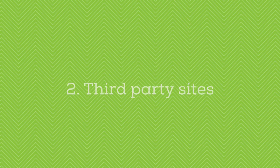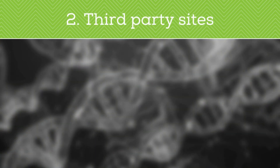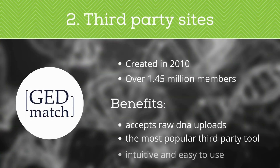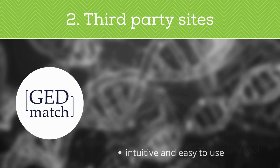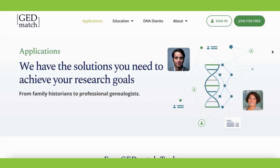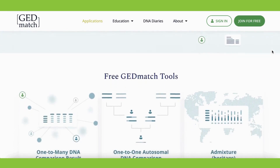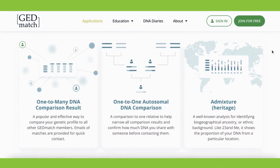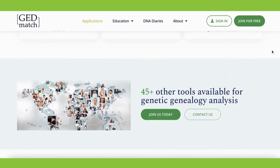Now let's talk about some third-party sites, starting with GEDmatch. GEDmatch was created in 2010 and boasts over 1 million members. It allows users to upload their raw DNA results and compare them with other users for free, regardless of what test they purchased. It's intuitive and easy to use, and is a great first stop after you receive your initial test results. We'll have links to all the sites mentioned in this video in the description box below.